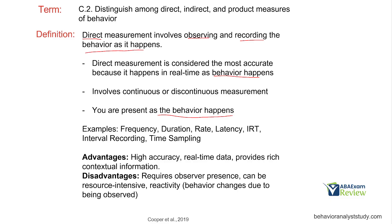Continuous or discontinuous recording falls under that direct measurement umbrella. Examples include frequency, duration, rate, latency, inter-response time, interval recording, and time sampling. All of these involve the direct observation of the behavior. We can't go back in time and watch it — we can't just ask for a report. If you're asking your technician about frequency they collected, you did not directly measure that behavior; the technician did. Whoever is observing the behavior as it happens is the one conducting that direct measurement.